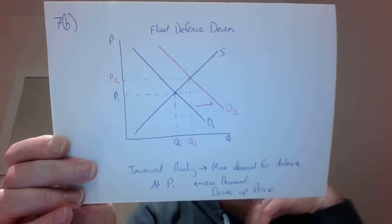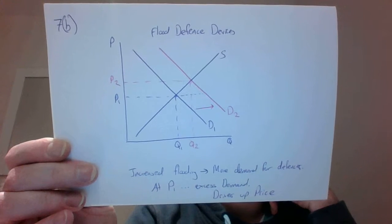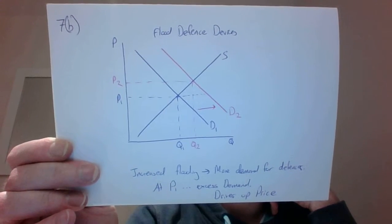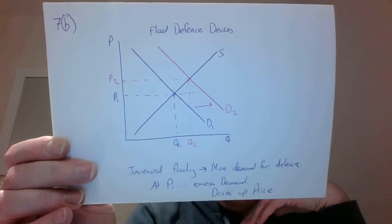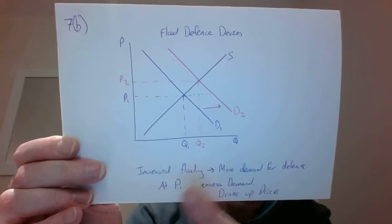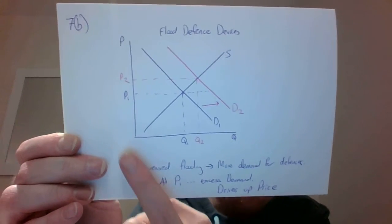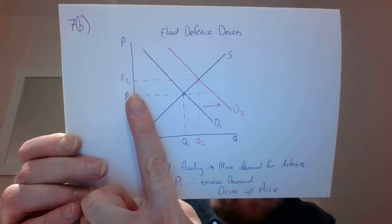It's not a bad idea whenever you're analyzing these diagrams to really spell it out, the whole thing about the disequilibrium. And so if you said the demand shifts to the right, a good strategy is to say that at P1, after the demand curve shift,